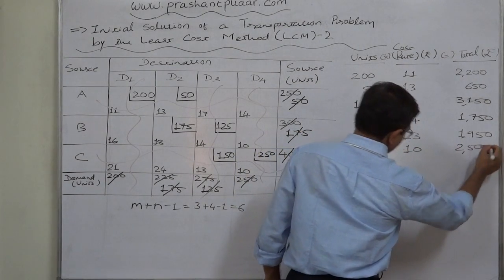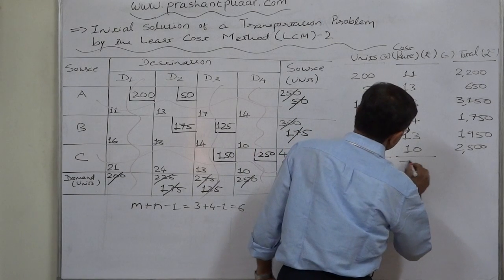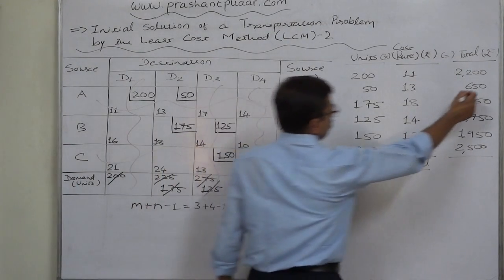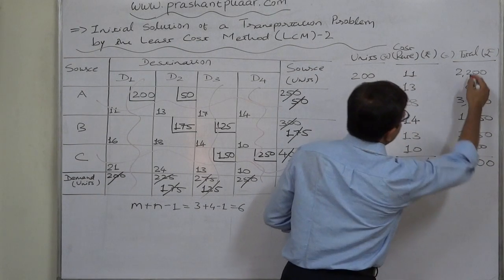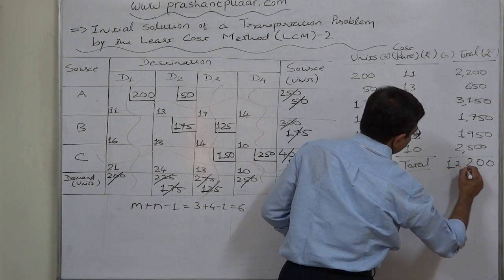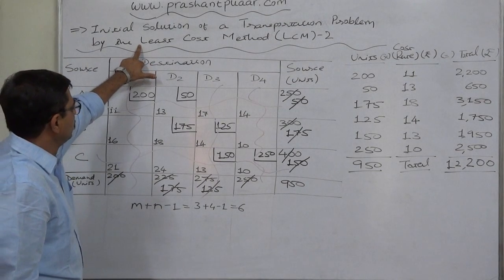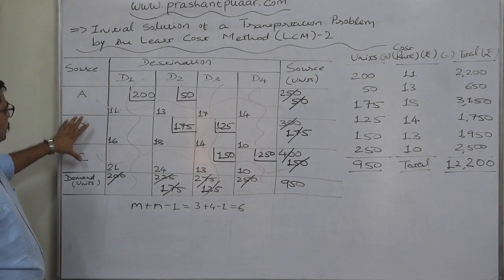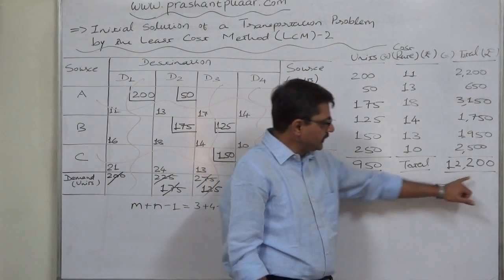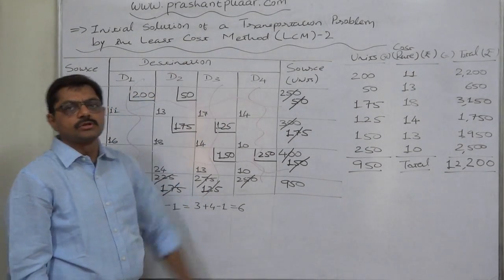The last allocation is 250 units at 10 rupees = 2,500 rupees. The total comes to 12,200 rupees. We can conclude that using the Least Cost Method to transport goods from sources A, B, C to destinations 1, 2, 3, 4, we transport a total of 950 units at a total cost of 12,200 rupees. That's all — thank you.